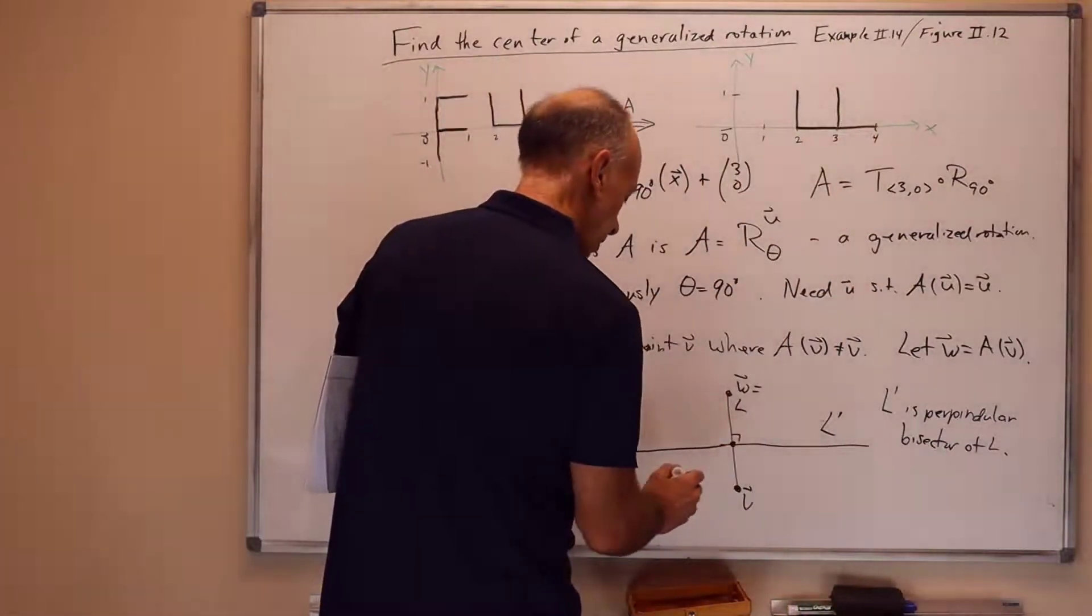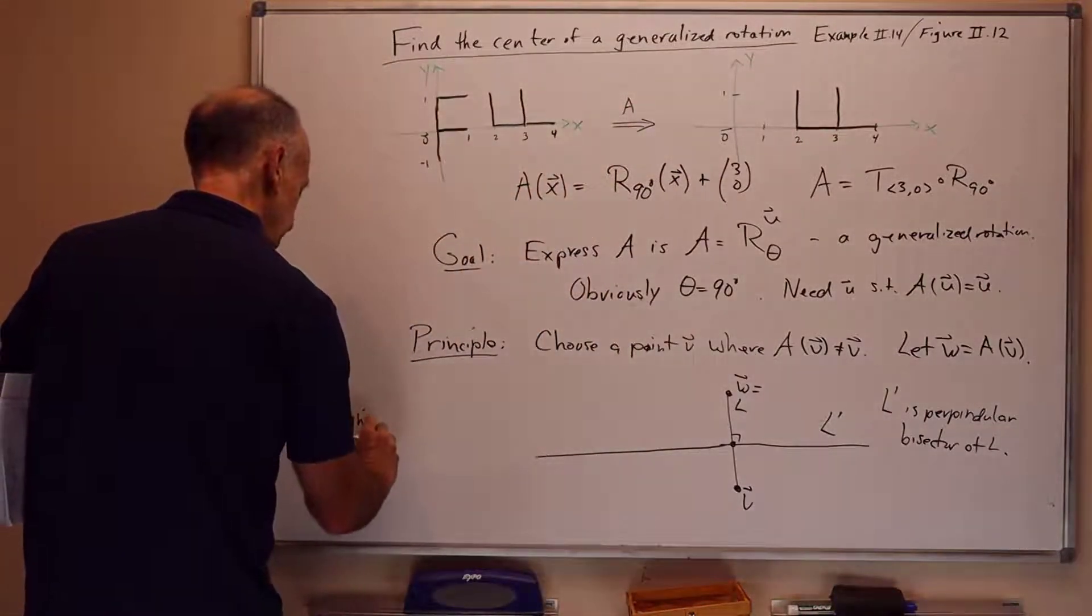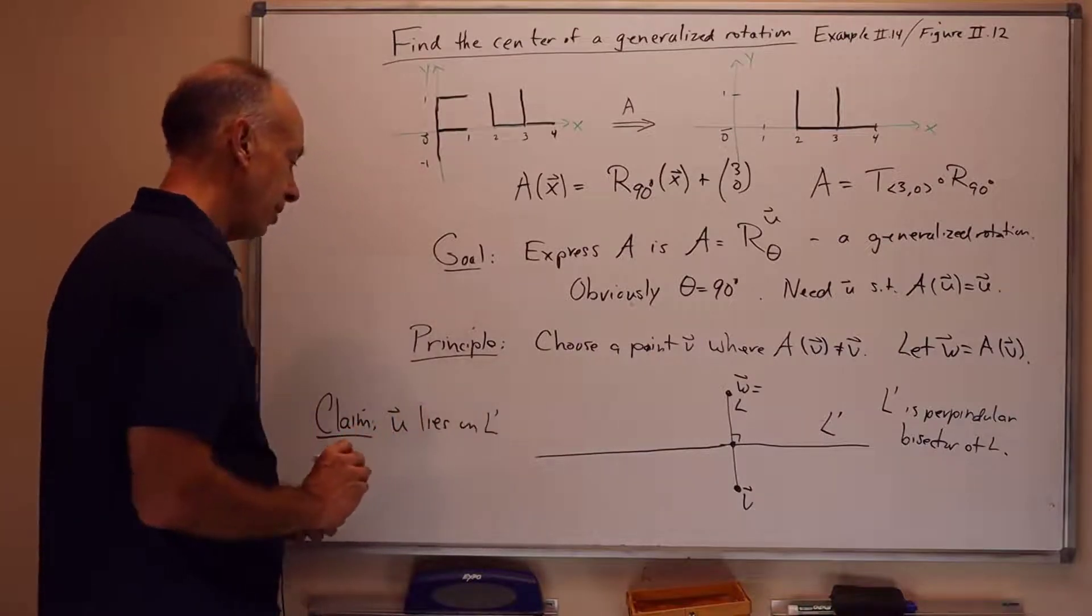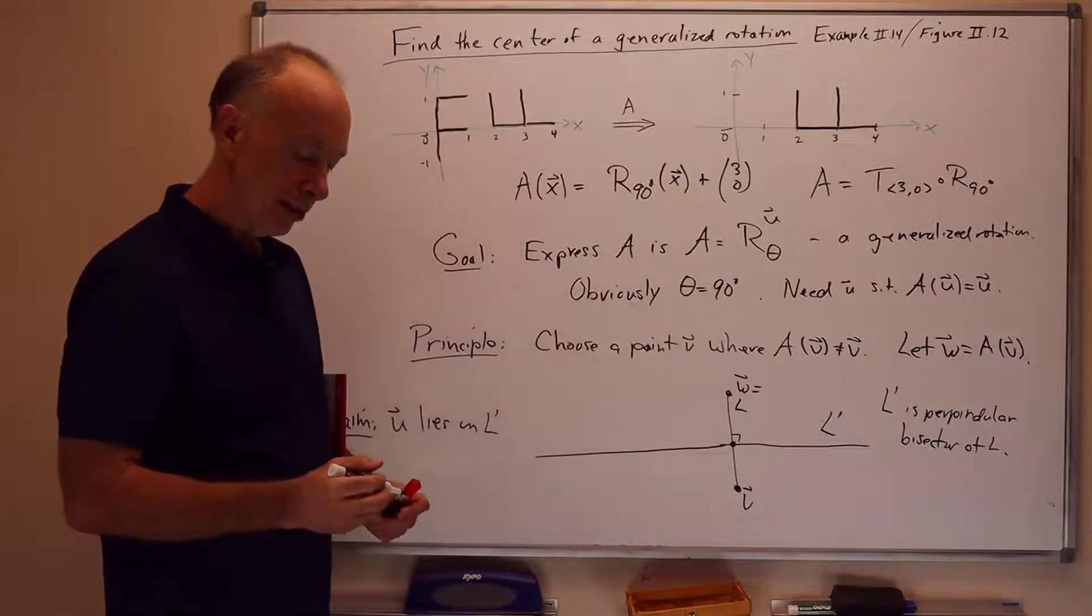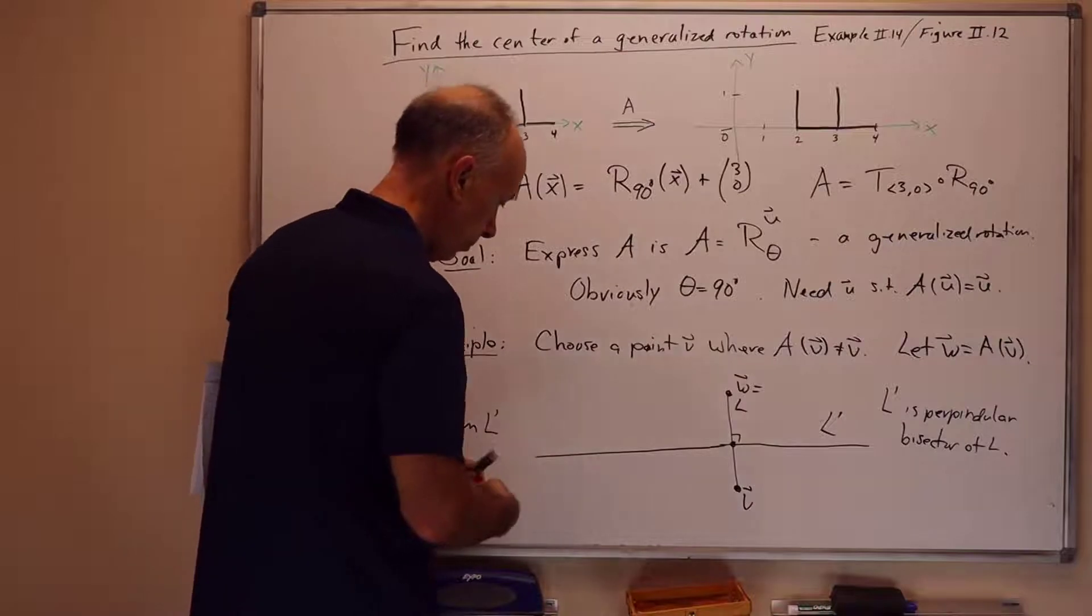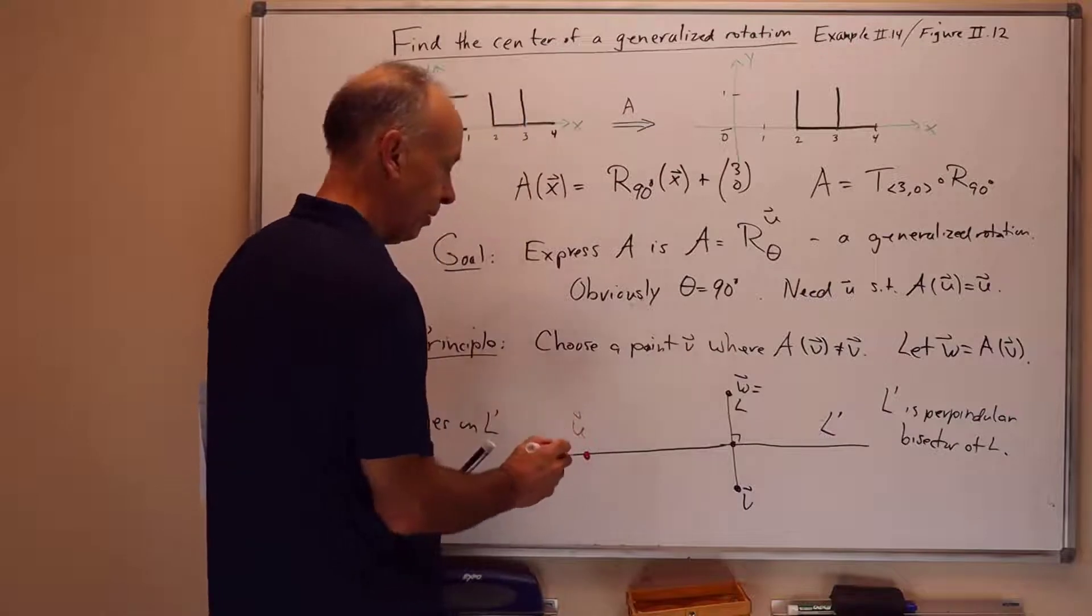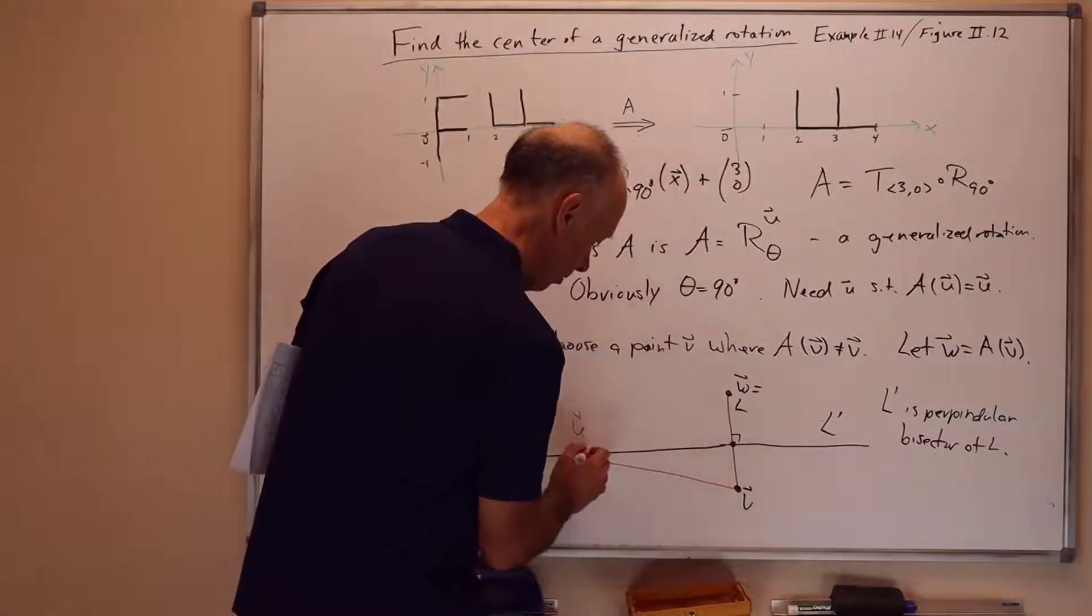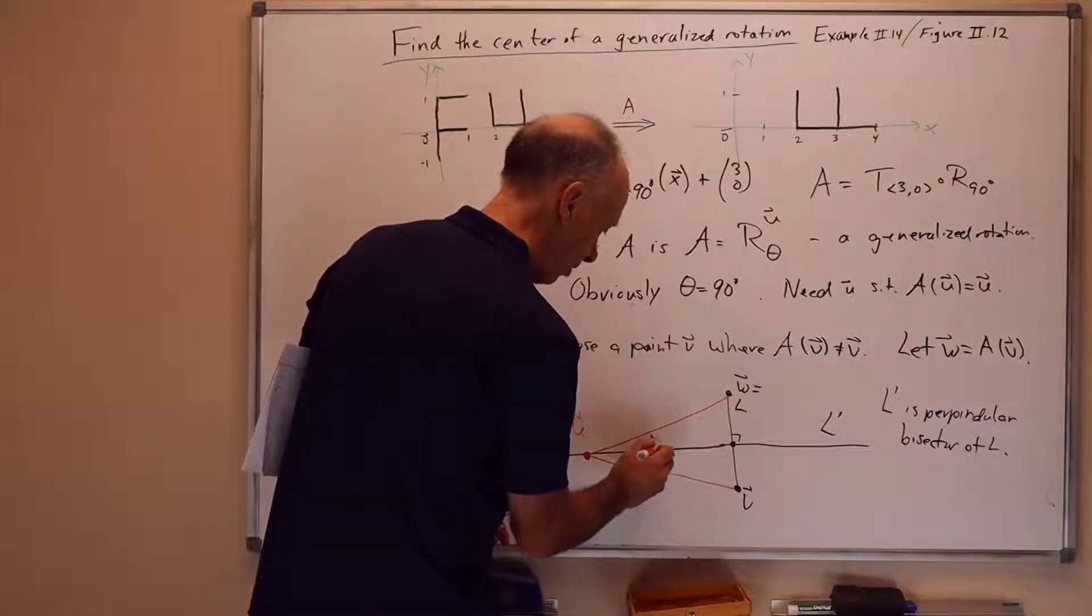So we have a right angle here. And the claim then, and here's the principle, is that u lies on l prime, on this perpendicular bisector. So u is somewhere on this line here. And let me draw the picture for this. The u is lying on the perpendicular bisector. We draw the line from u to v and from u to w.